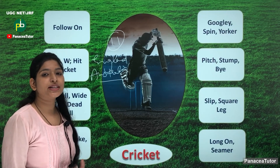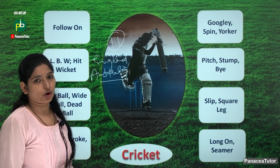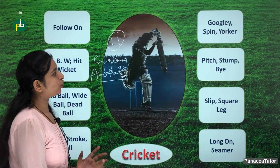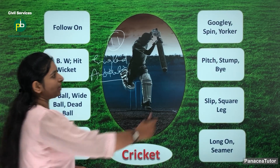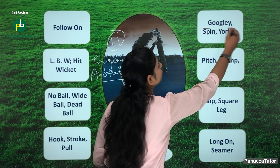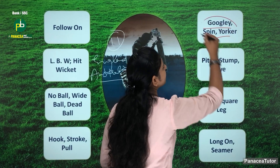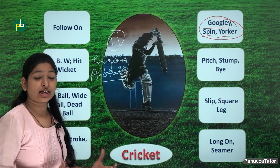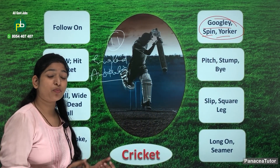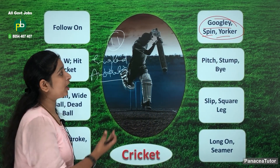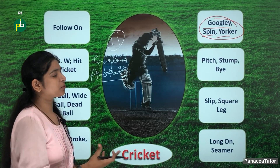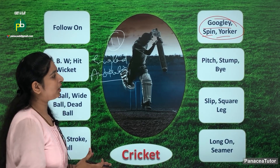Let's look at cricket related to some important terms. The terms in front of us are googly, spin and yorker. What are these? These are the balling styles — the different ways in which the ball is bowled: googly, spin and yorker.